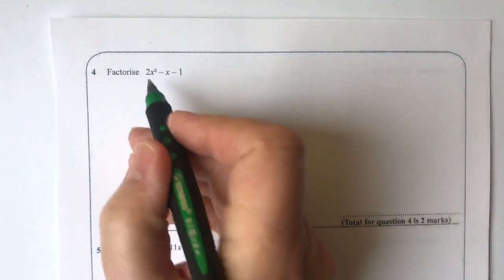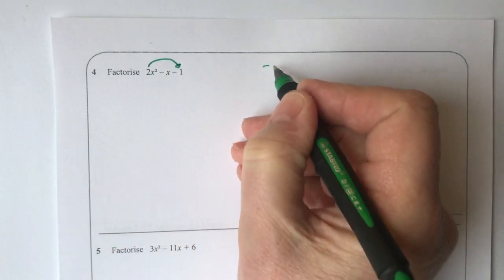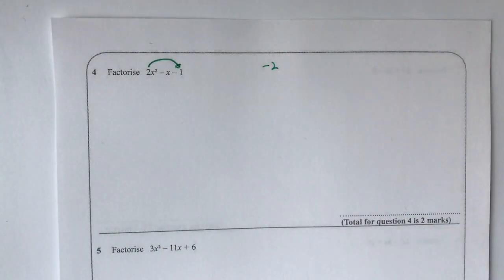The way that I do it is I multiply the coefficient by the last number so I get minus 2, and then what I need to do is look at two numbers that when I add them together will make a minus 1, that's minus x or minus 1x.